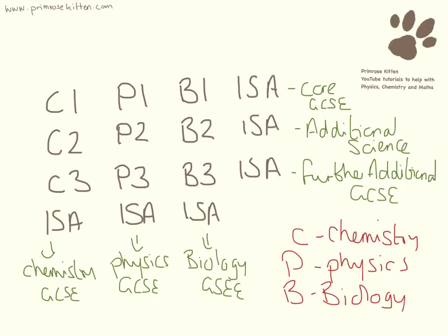On the flip side, if you've signed up to do the additional double science course but you want to try the triple science course, you only need to learn a few topics more. Some schools will let you change between additional and triple quite easily and some schools don't — it's really up to your individual school. If there is something you're interested in, I suggest that you talk to your teachers about whether that's possible.